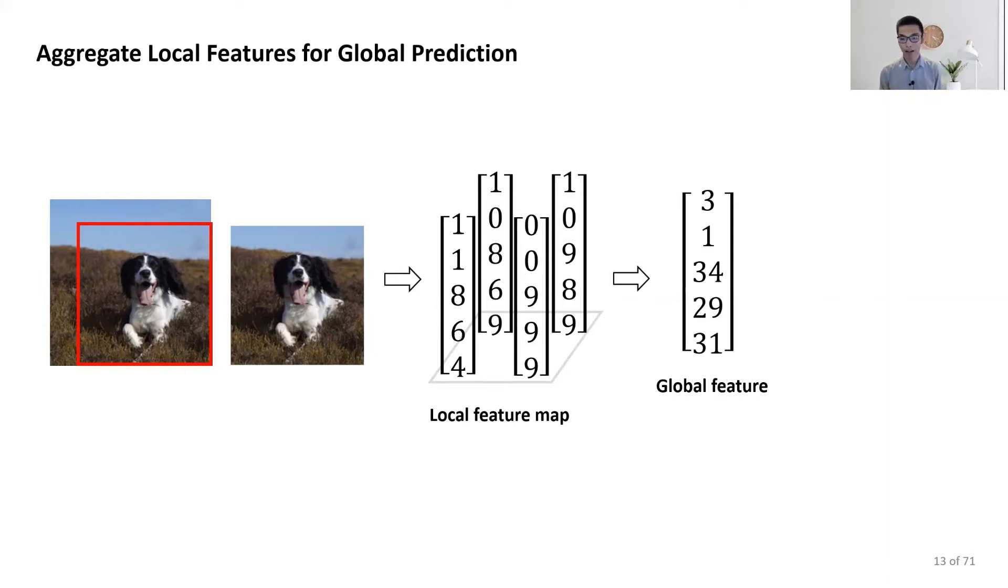Getting the local feature map, we can aggregate them for our final prediction. The first step is to aggregate to get the global features. In conventional networks, we can do average pooling. Here, I element-wisely add everything together. Then, we can use a classification layer to make the global prediction logits. In this example, we consider a binary cat versus dog classification. We predict a dog because it has high activation.